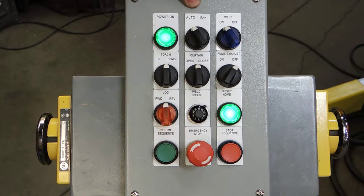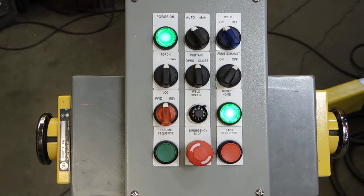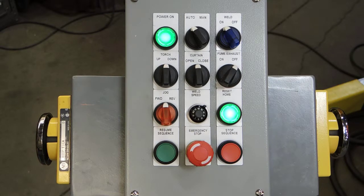Our next button is auto and manual. In automatic mode, the operator would use the palm buttons on the side to start the weld sequence.